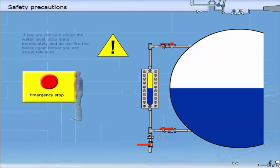If you are not sure about the water level, stop firing immediately and do not fire the boiler again before you are absolutely sure.